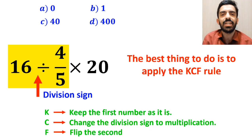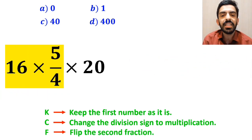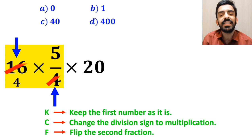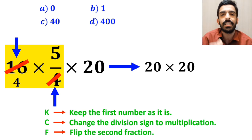So we remove the highlighted part and replace it with 16 times 5 over 4 multiplied by 20. Now we can easily simplify the number 16 with the 4 in the denominator. And instead of this expression we can write 20 times 20, which finally gives us the answer 400.